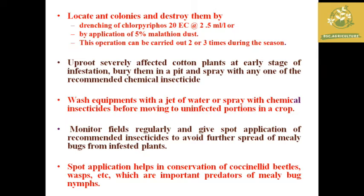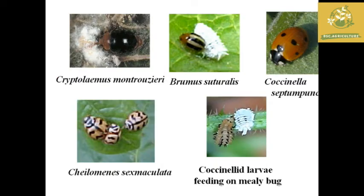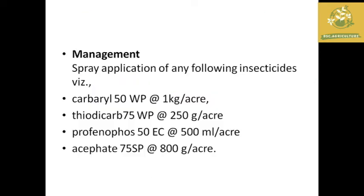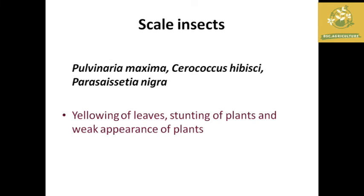Further management practices include locating ant colonies and destroying them, washing equipment with a jet of water or spraying with chemical insecticides before moving to uninfected portions of crops. Spot application helps in conservation of coccinellid beetles, wasps and other important predators of mealybugs. Chemical sprays include carbaryl, thiocyclam, profenofos, and acephate at the recommended dose.